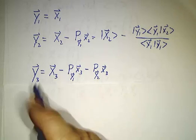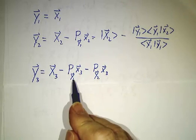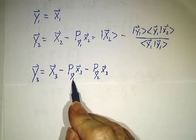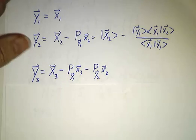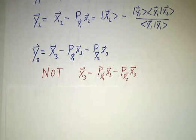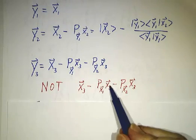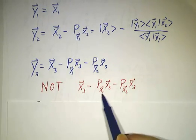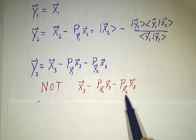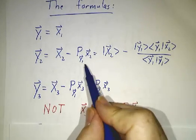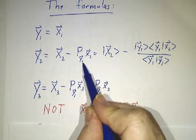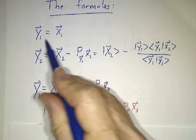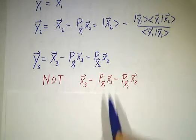How do we do stage three? Well, y3 is x3 minus the projection of x3 onto y1 minus the projection of x3 onto y2. And here I have to give you a warning. The most common mistake that students make in doing Gram-Schmidt is they do projections onto the previous x's rather than projections onto the previous y's. It doesn't hurt you at the first stage because projecting onto x1 is the same thing as projecting onto y1, because y1 and x1 are the same vector. But at the second stage, it kills you.